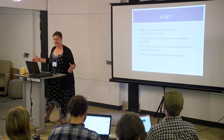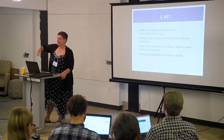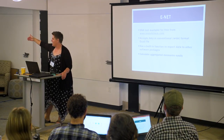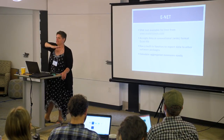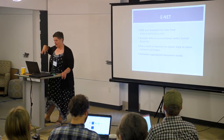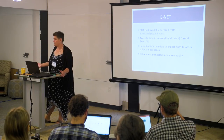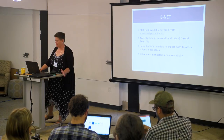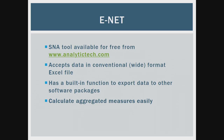I want to show you ENet — and Steve is going to fix it, because I wrote a book about it. ENet accepts data in conventional wide formats where you've got age_1, age_2, age_3 and all the alter data is contained within rows. It accepts that kind of data as Excel, so it's really versatile because you can export to Excel in any stats package. It also has a function to export data in lots of different formats to any stats package.